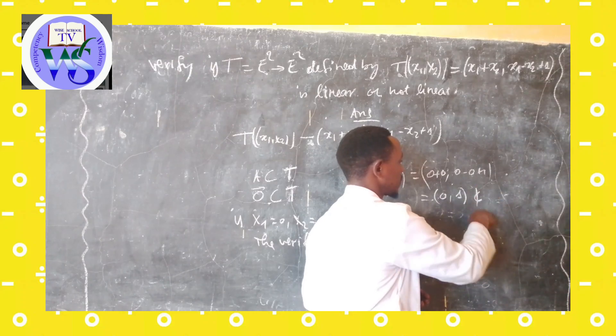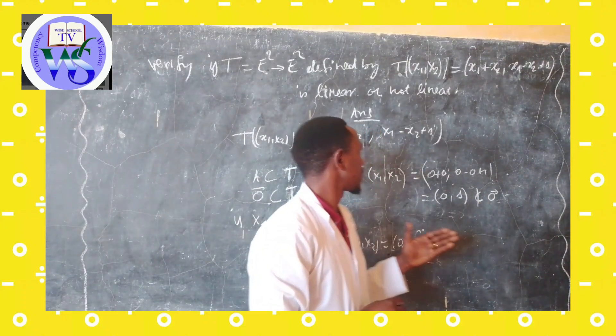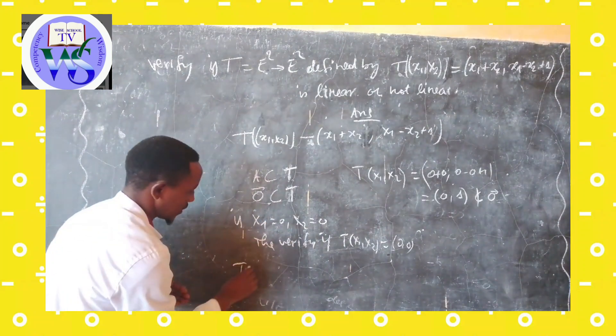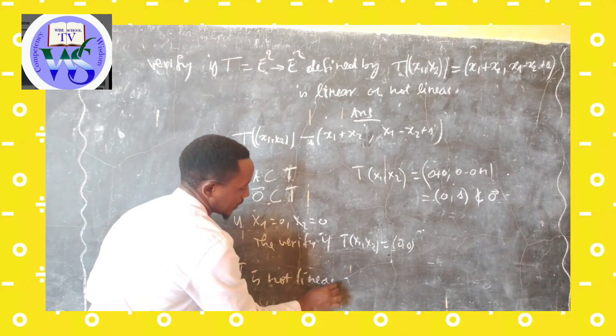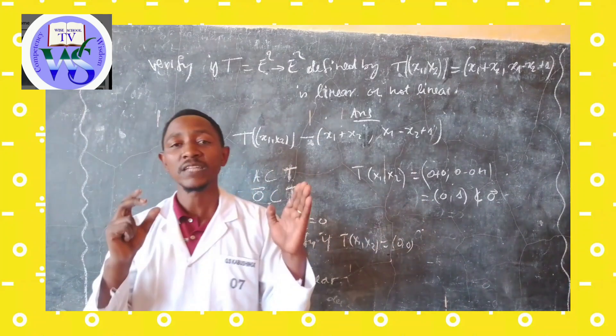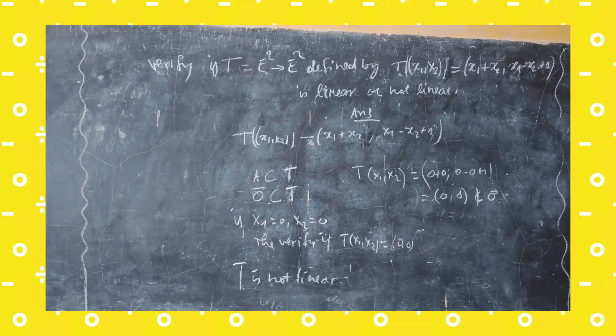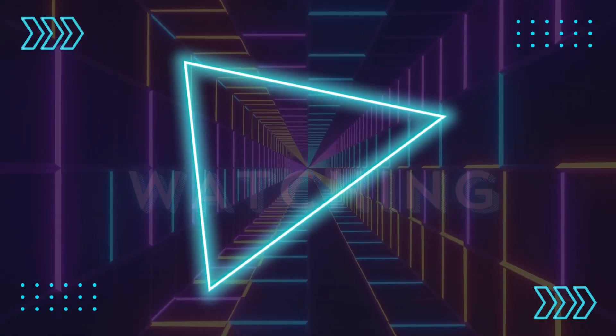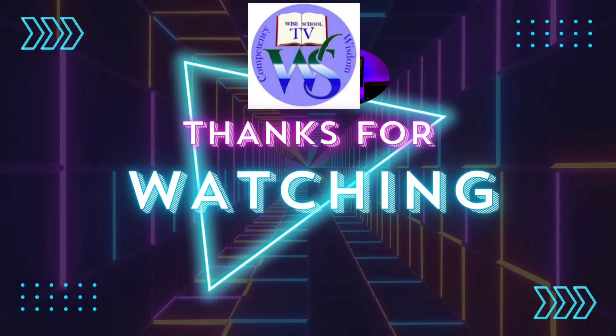So this is not the zero vector, it means that this transformation T is not linear. So this is the conclusion of this transformation. Thank you.